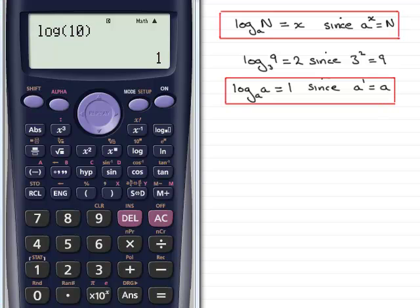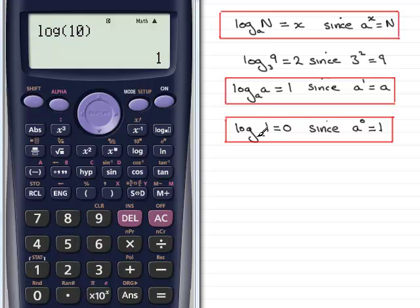Let's introduce you to another rule. Here we've got the log of 1 in any base equals 0. Why? Because the base a raised to the power 0, anything to the power 0, is always 1.